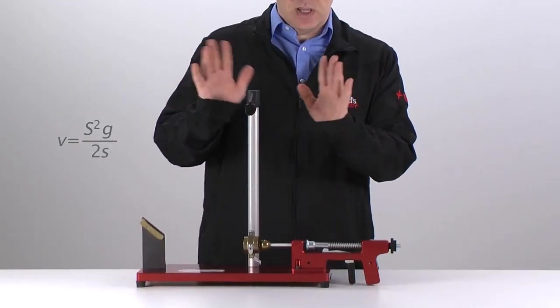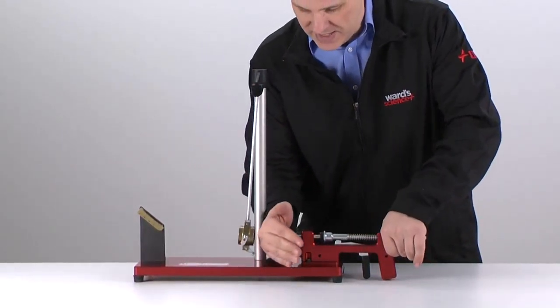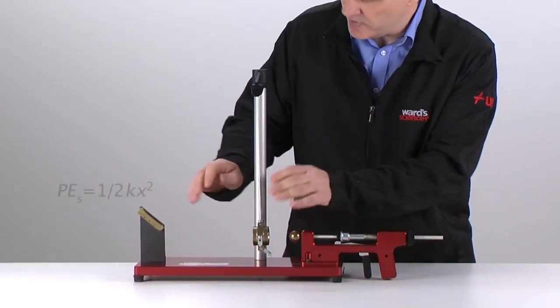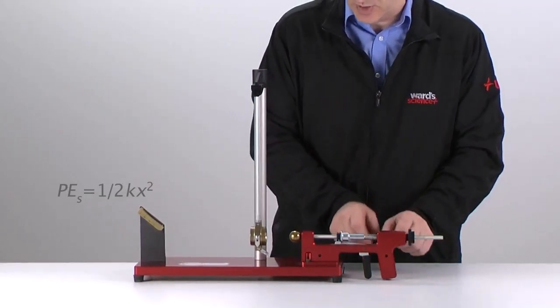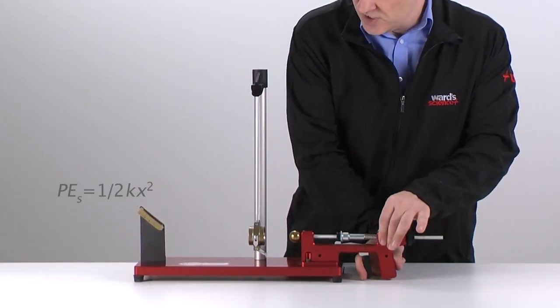Now to set it up for the classic experiment you simply load back the ball, you make sure no one is down in the direction of the ball in case it does miss which is very rarely, and then you simply fire.